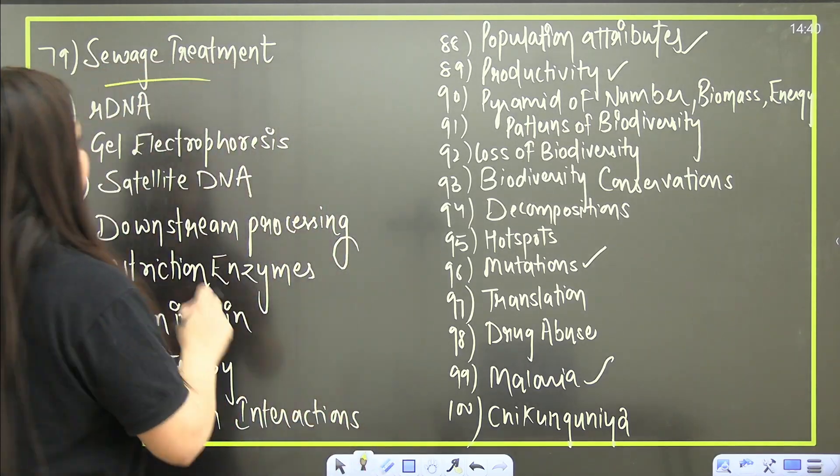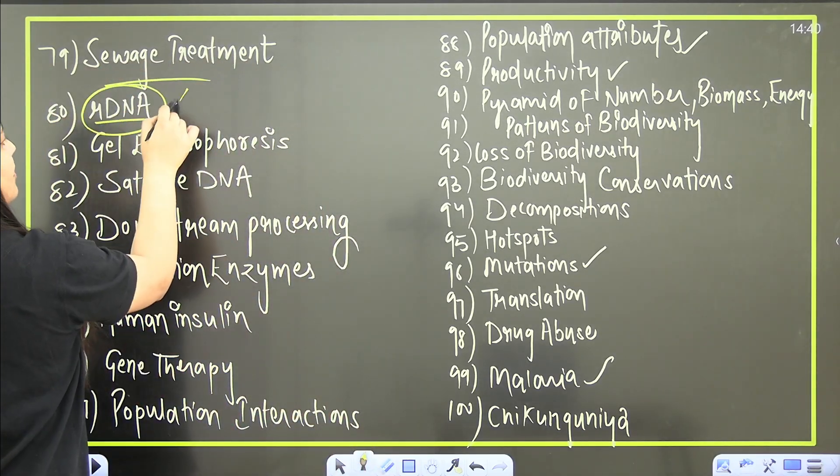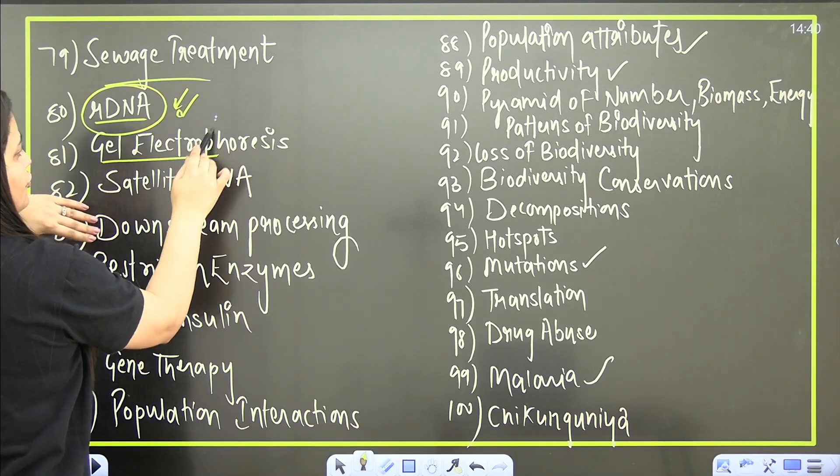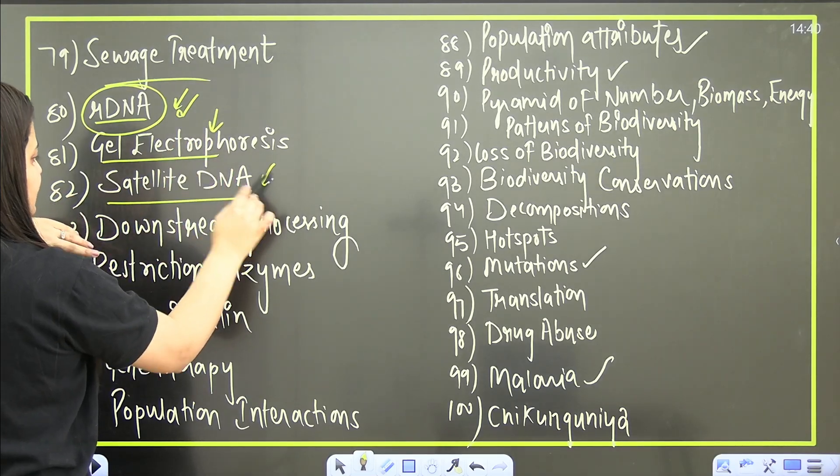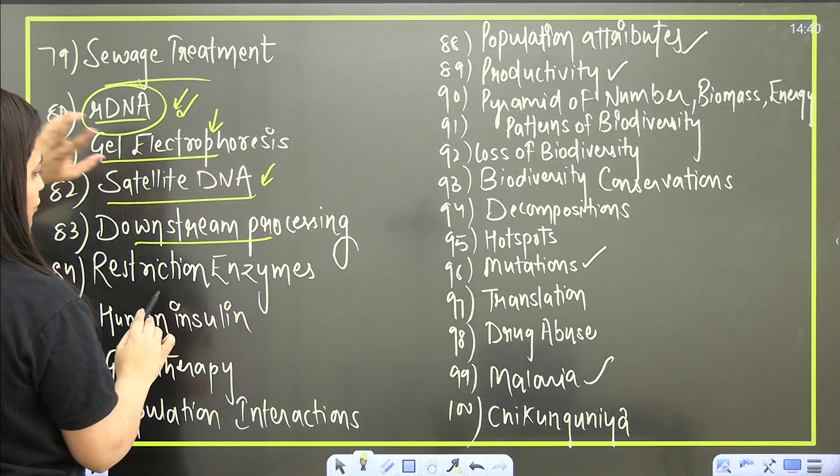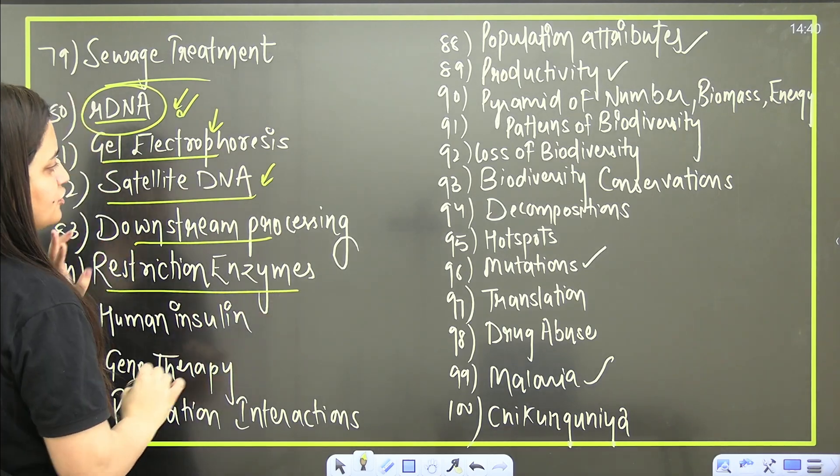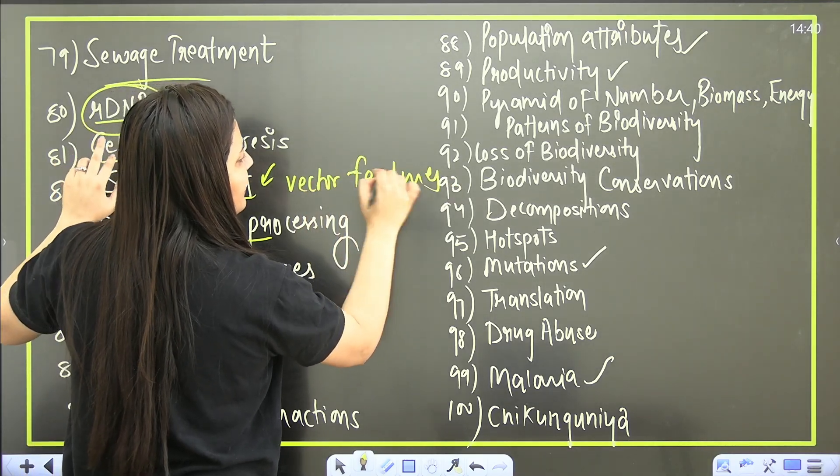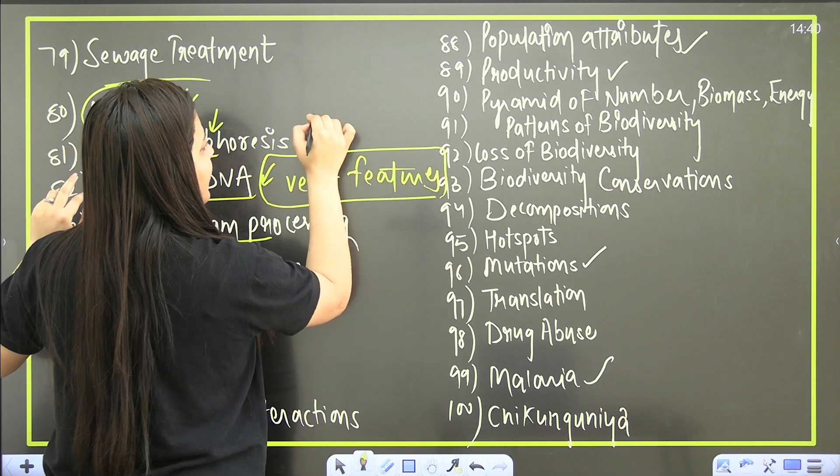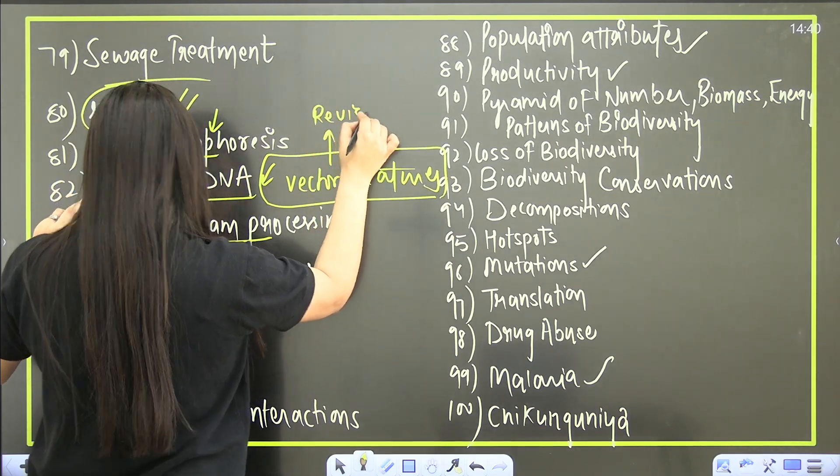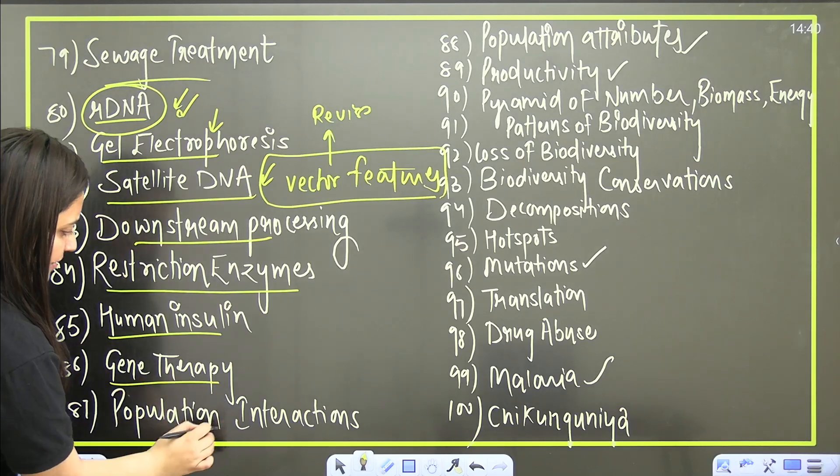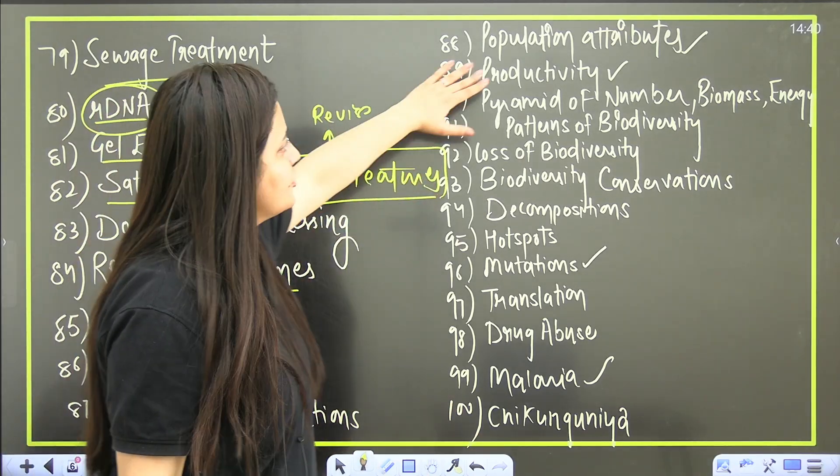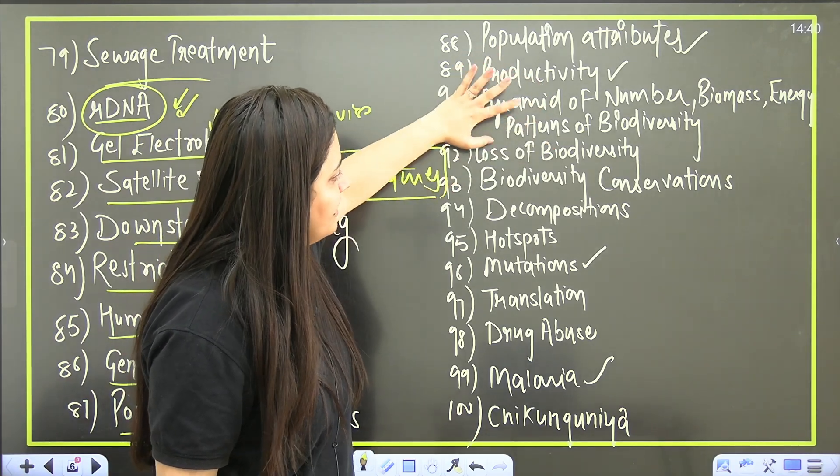Then rDNA - overall this process is important. I have even discussed the parts here - gel electrophoresis, satellite DNA, downstream processing, do not miss this. Restriction enzymes, do not miss this. And vectors features also - overall rDNA is covering it, but separately do read it as well, revise it as well. Then human insulin, gene therapy. Then come to the next part - ecology, population interactions, attributes, productivity, pyramids, nutrient cycles.